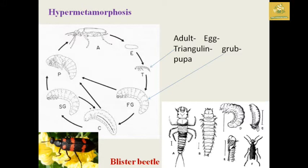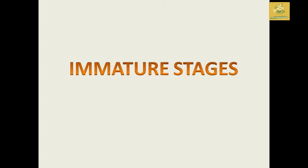We are also going to see hypermetamorphosis, where the adult lays eggs and they form a triungulin or true grub, and then form a pupa. They used to have up to five stages, which is known as hypermetamorphosis.